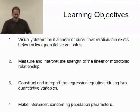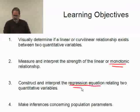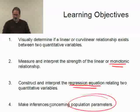What we want to do is be able to visually determine if a linear or curvilinear relationship exists between two quantitative variables. I want to measure and interpret the strength of a linear or a monotonic relationship, and I will talk quite a bit about what exactly it means for something to have a monotonic relationship. And construct and interpret the regression equation. The regression equation makes reference to a simple linear regression relating two quantitative variables. And of course, like usual, we want to be able to make inferences regarding the population parameters.